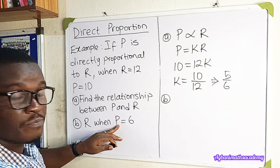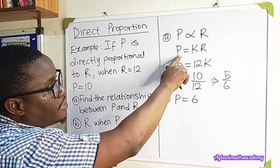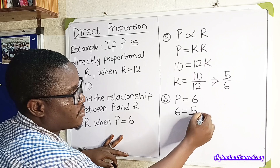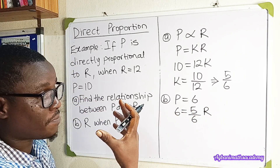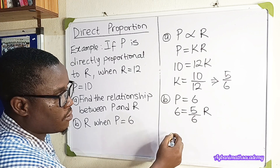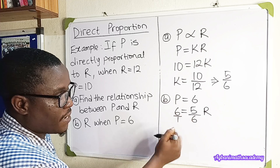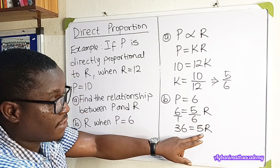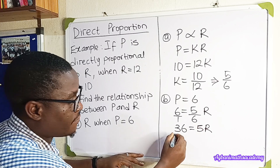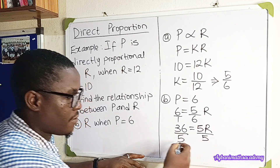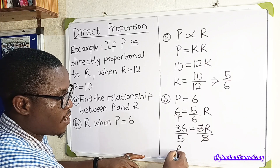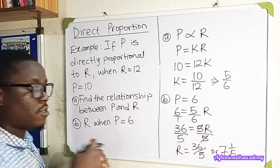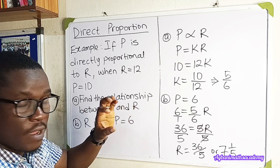P is equal to 6. The relationship is P = KR, so: 6 = (5/6)R. We can cross-multiply — remember 6 is the same as 6/1. So 6 × 6 = 36, and 1 × 5R = 5R. To get R, we divide both sides by 5: R = 36/5, or 7 and 1/5. We've been able to find R when given P, because we know the constant of proportionality.